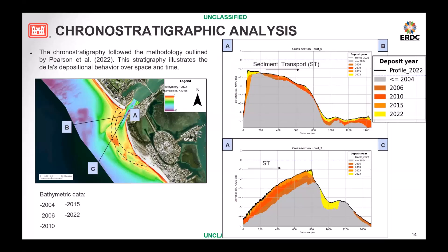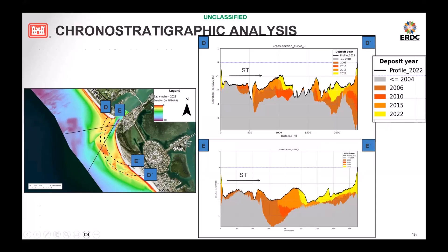The chronostratigraphy analysis illustrates delta deposition behavior over space and time. For New Pass, we can see the transects from A to B and A to C shown on the right side of the slide. We are using five bathymetric surveys, and from the statistics we can see where segments have been depositing, places of erosion, and from the arc transect we can see where sediment is moving. Since the longshore current is from northwest to southeast, we would expect to see sediment moving in that direction, and this highlights where sediment is moving and depositing.